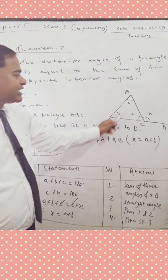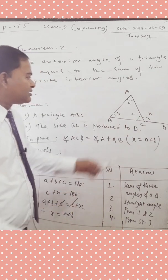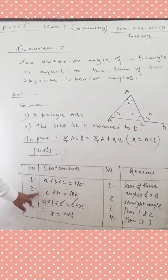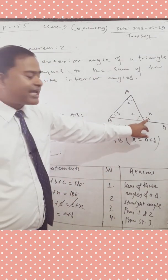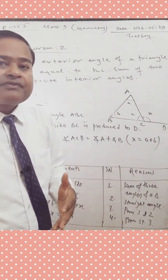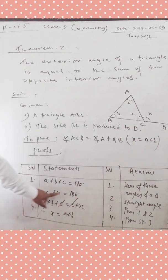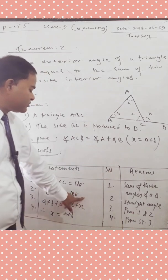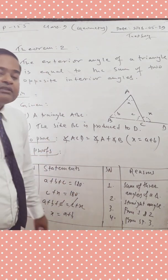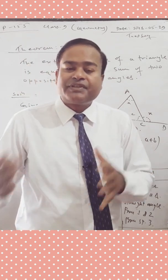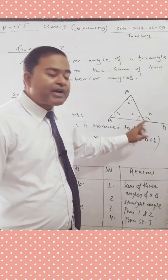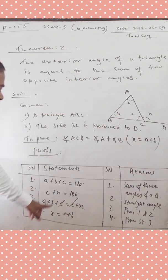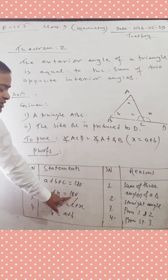In statement number 1, we write: A plus B plus C equals 180 degrees. The reason is: sum of interior angles of a triangle. In statement number 2, we write: C plus X equals 180 degrees. The reason is: sum of the parts of a straight angle, which is always equal to 180 degrees.